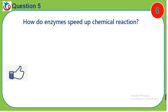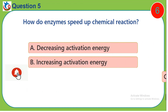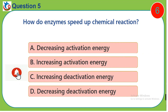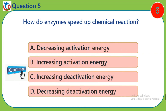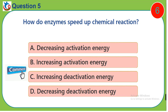Question 5. How do enzymes speed up chemical reactions? A. Decreasing activation energy. B. Increasing activation energy. C. Increasing the activation energy. D. Decreasing the activation energy.